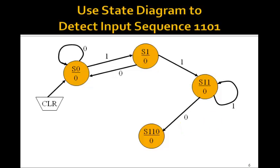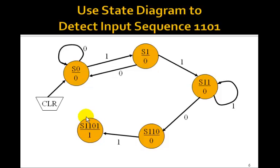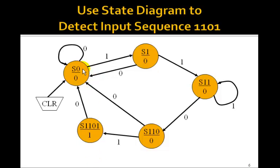Now suppose we get another 1 here. If we get another 1, that means we've detected the sequence 1,1,0,1 — or it could have been 1,1,1,1,1,0,1. In which case we're done, so we label the output 1, meaning we have found the sequence 1,1,0,1. But suppose we're back in S110 and we get a 0 instead — we have to go all the way back to S0 to start over again. Similarly, if we're in S11 and get a 0, we also go back to S0.